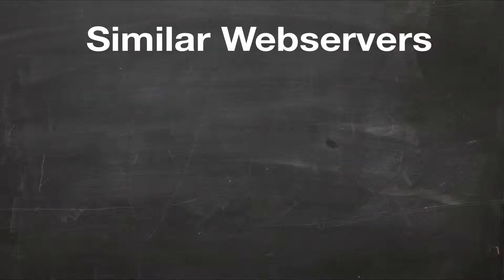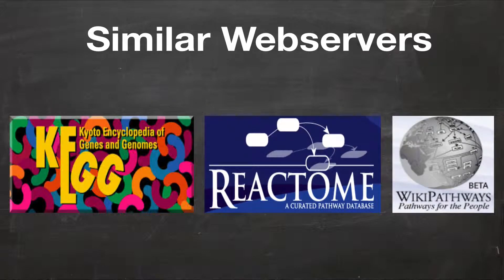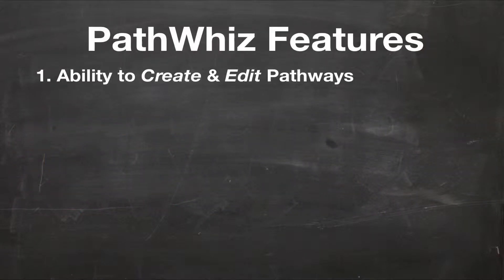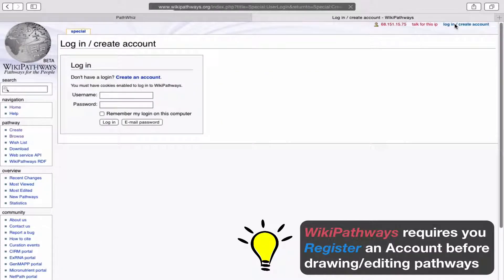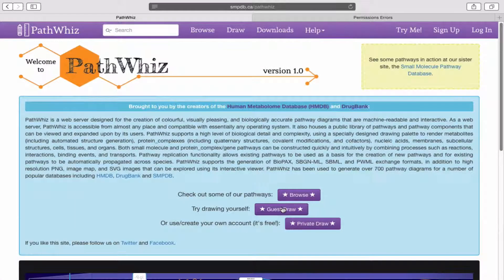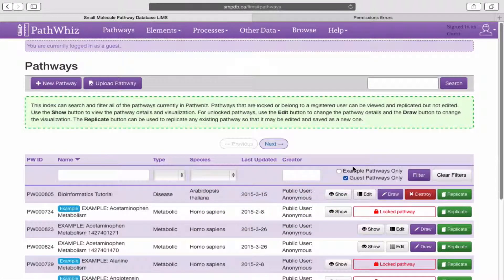Unlike other similar web servers such as KEGG, Reactome, and WikiPathways, PathWiz offers many features beyond your standard pathway website. For example, one of these features includes the ability to create and edit pathways. Although WikiPathways and others offer similar services, what makes PathWiz different is you don't have to register an account in order to start drawing your pathway. Instead, you can immediately start by clicking Guest Draw on the homepage and start creating. This is a great plus for those who want to experiment and try things first.